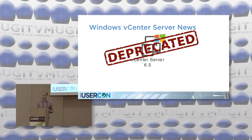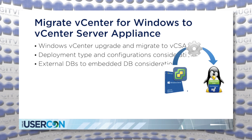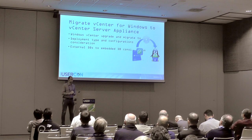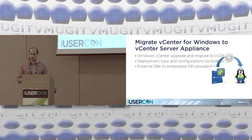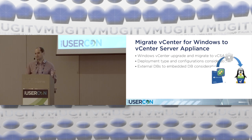The Windows vCenter Server is deprecated, so we must have a way to move from Windows to the appliance. There are questions you must ask yourself before doing that migration. Products running on top of the Windows vCenter Server may be Windows-based — check them upfront to ensure they support the vCSA, or contact those vendors since they will need to support the appliance. Also note that as part of the migration, the Windows vCenter Server machine will be shut down, so evaluate any applications running on that Windows box beforehand.